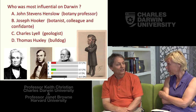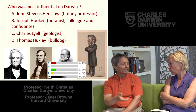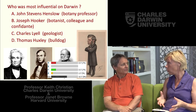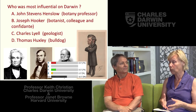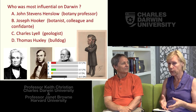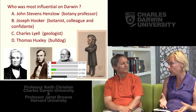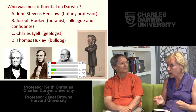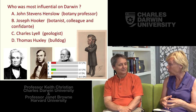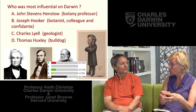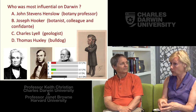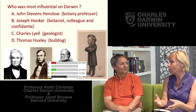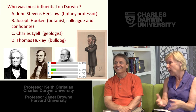Darwin didn't actually record which island the different finches came from. When he was collecting finches and all the birds on the Galapagos, it never crossed his mind that they might be different species — the islands are very close to each other. He didn't put a tag on the leg recording which island each bird was from, so all the Galapagos birds were put in one bag. It was when he got home and Gould asked 'Where did they come from?' that Darwin had to backtrack and reconstruct that information.